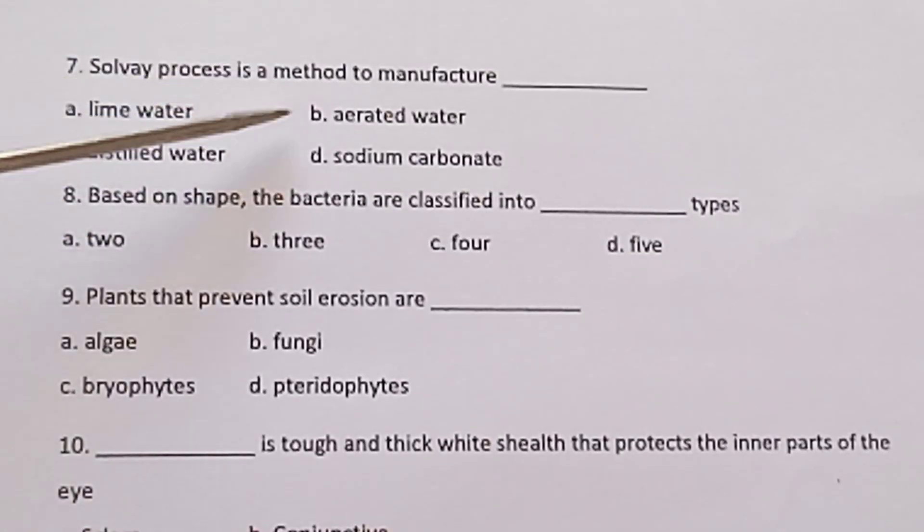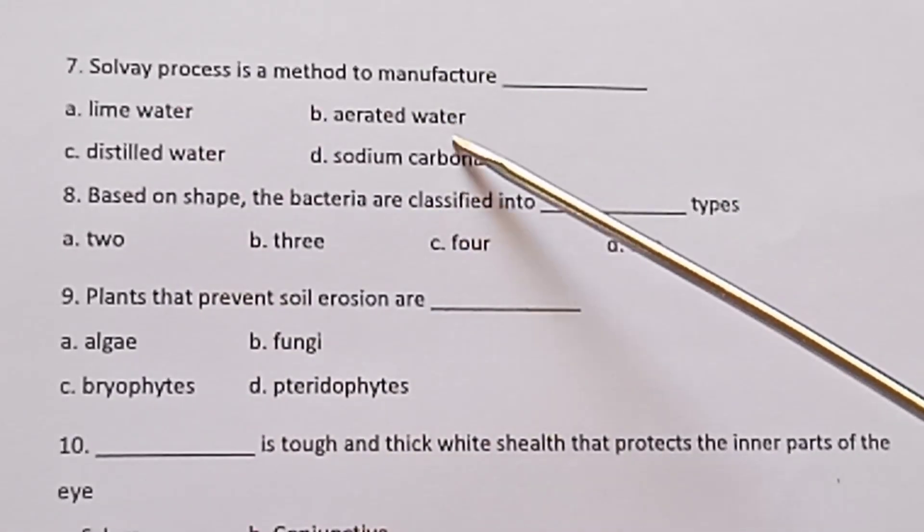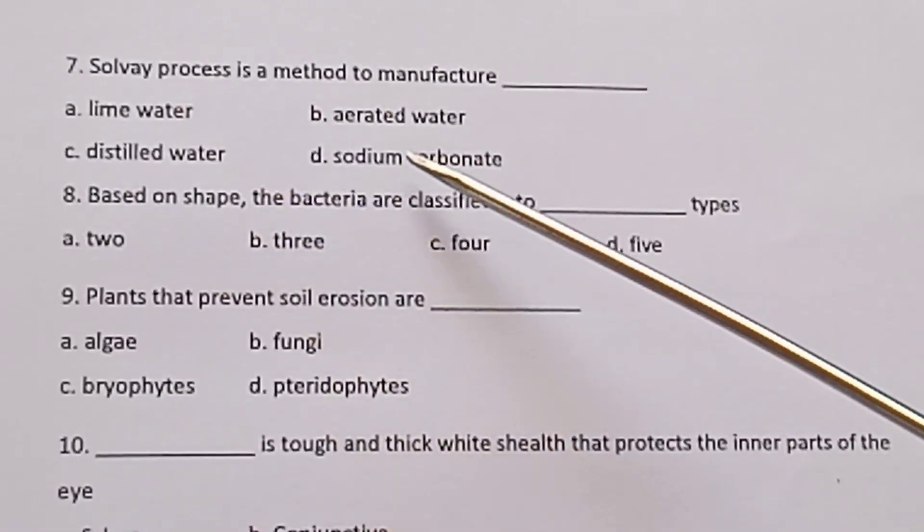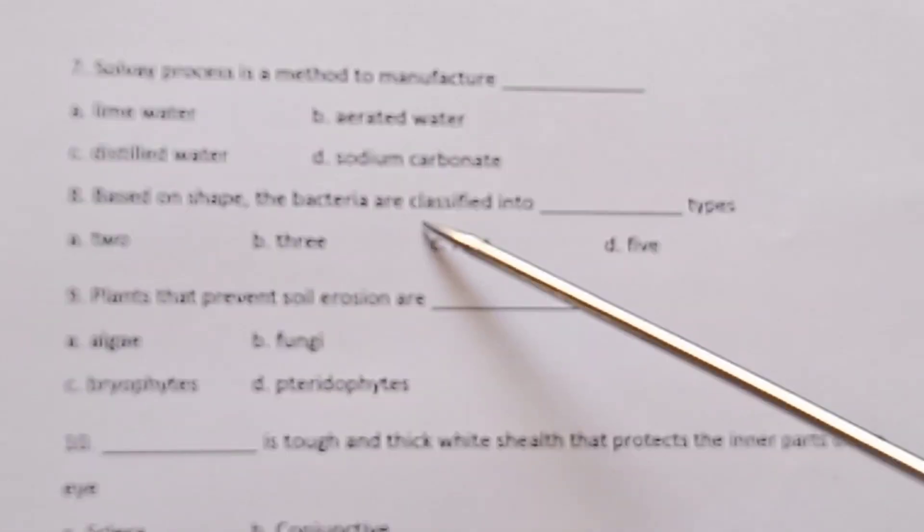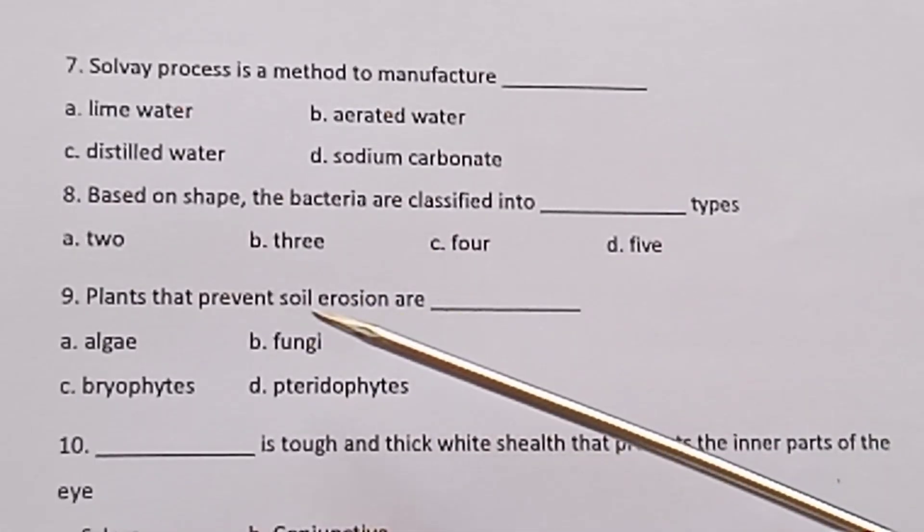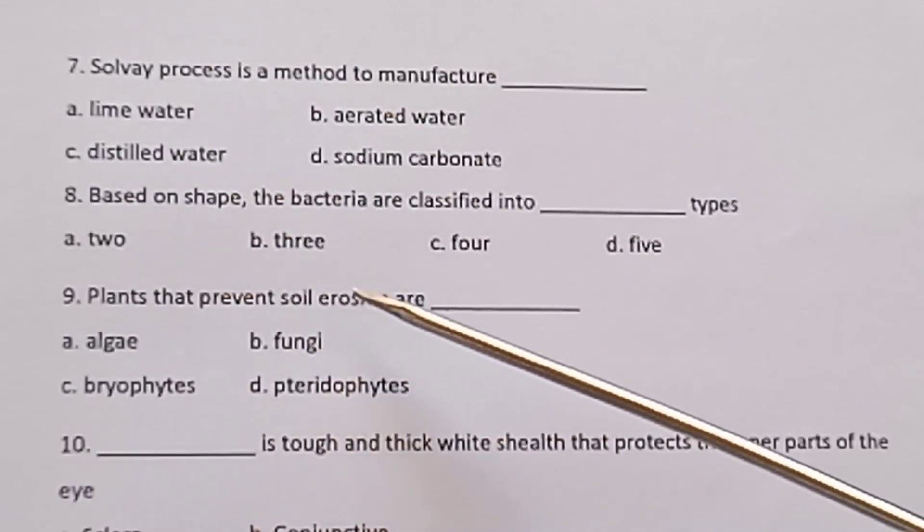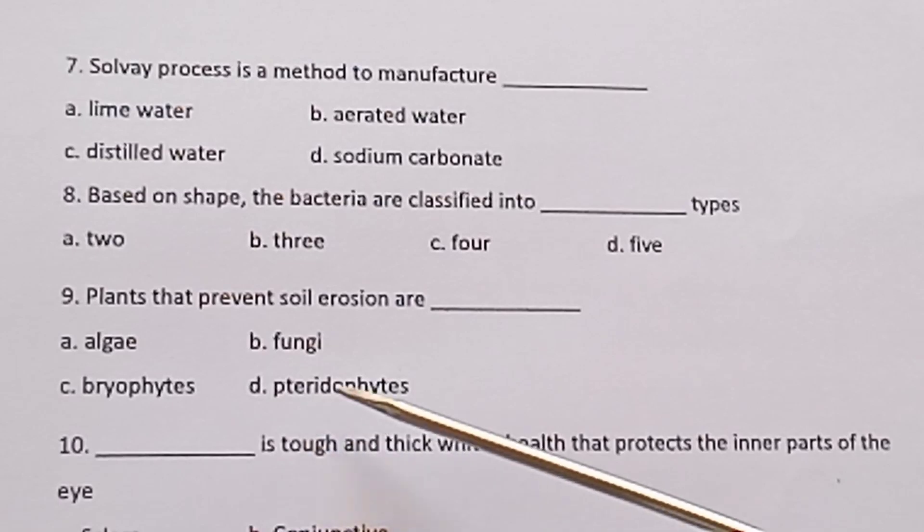Seventh one, Solvay process is a method to manufacture dash: lime water, aerated water, distilled water, sodium carbonate. Eighth, the bacteria are classified into dash types: two, three, four, five. Ninth one, plants that prevent soil erosion are dash: algae, fungi, bryophyte, pteridophyte.